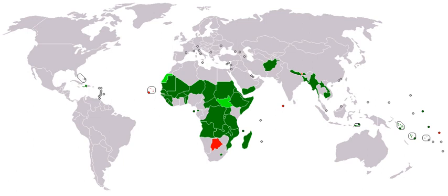Five countries belong to the 'emerging markets' group and are together called the BRICS countries: Brazil, Russia, India, China — all since 2006 — and South Africa.